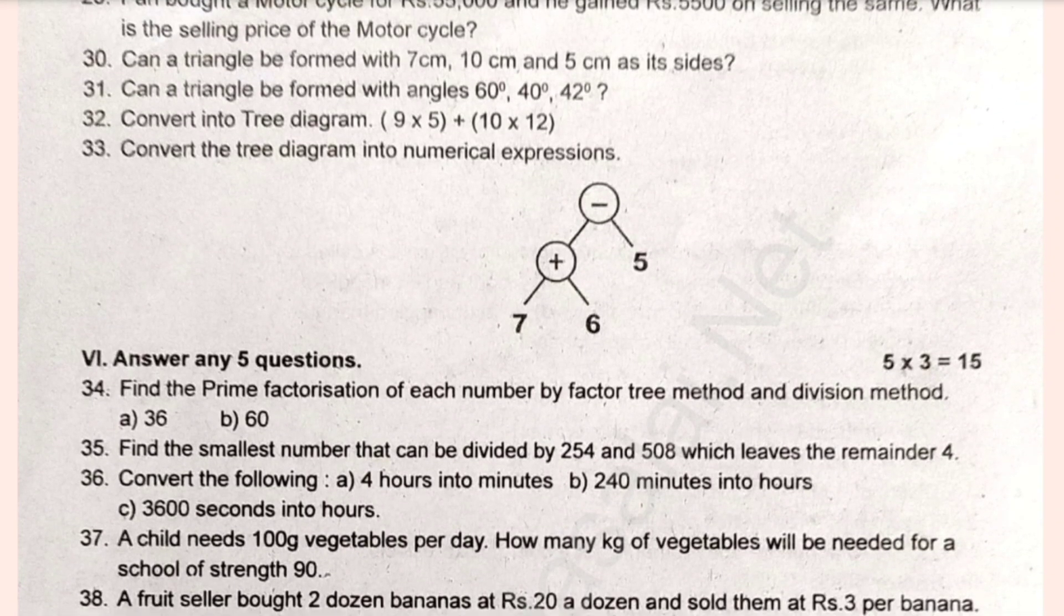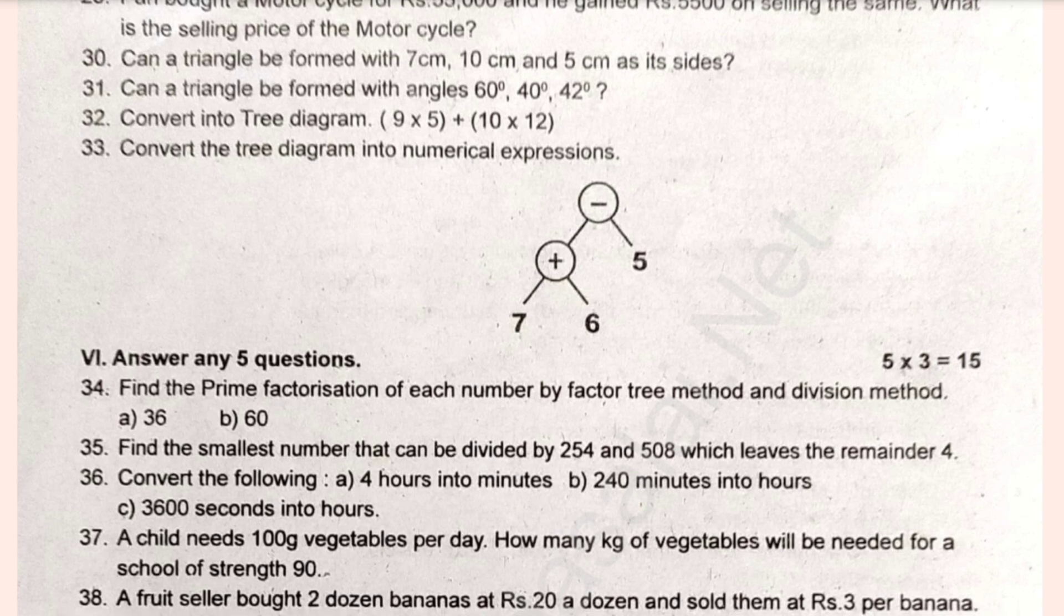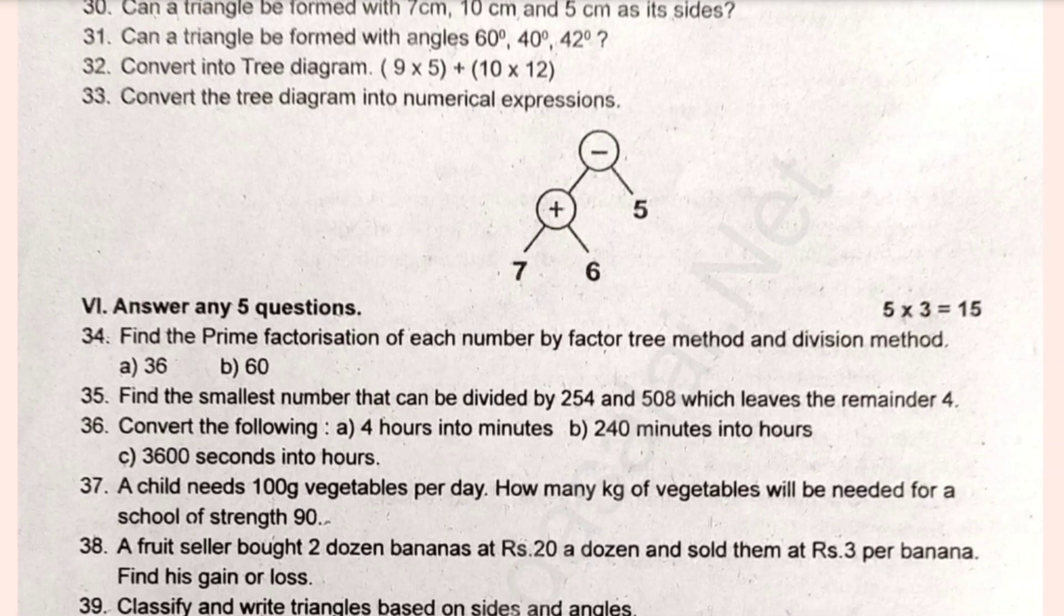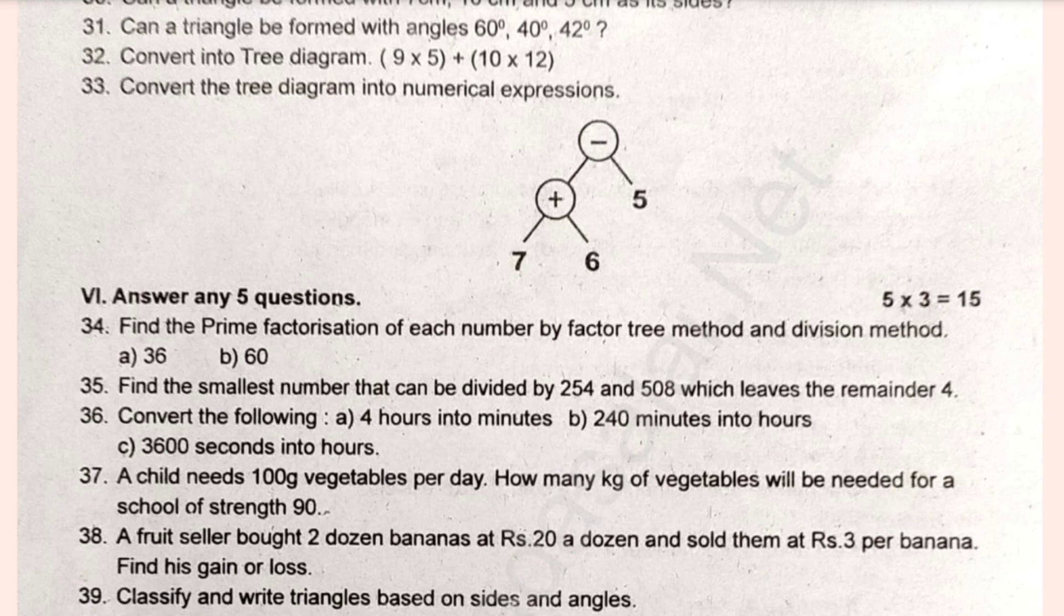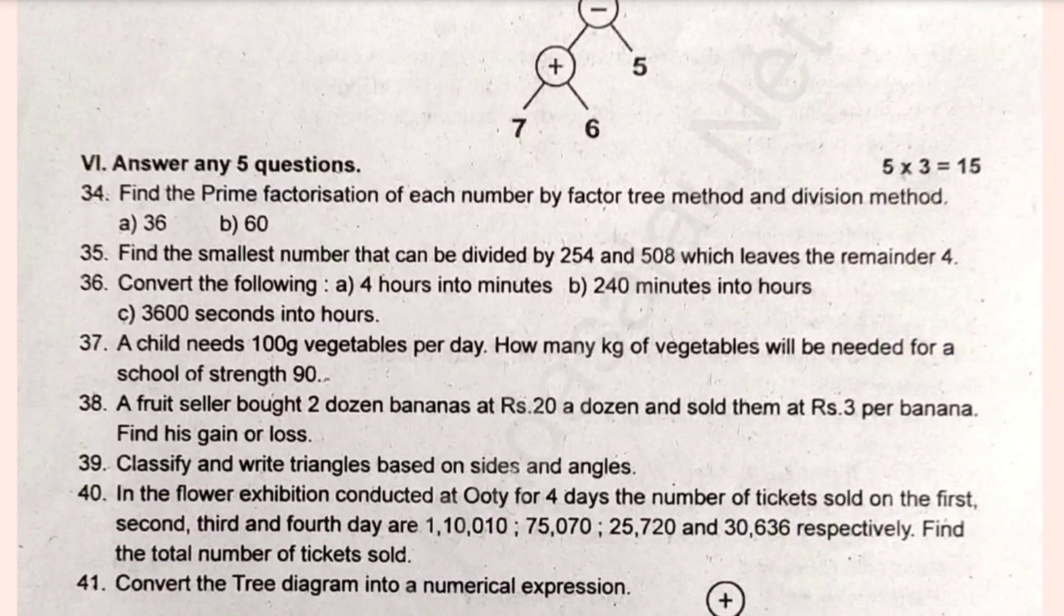Find the prime factorization of each number by factor tree method and division method. Find the smallest number that can be divided by 254 and 508 which leaves the remainder 4. Convert the tree diagram into a numerical expression.